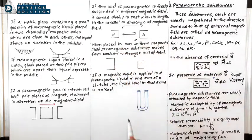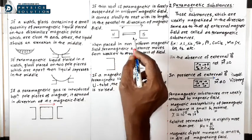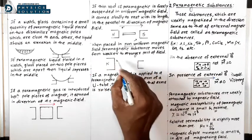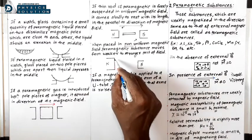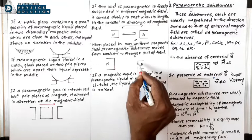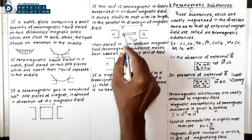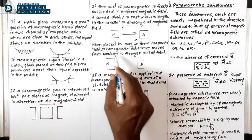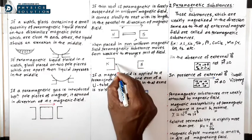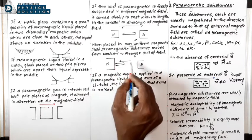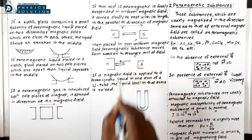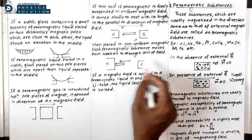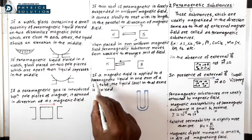If a thin rod of paramagnetic material is placed in a non-uniform magnetic field — where the N-pole is strong and the S-pole is weak — the rod moves from the weaker part toward the stronger part of the field, because paramagnetic substances are attracted by the magnetic field.